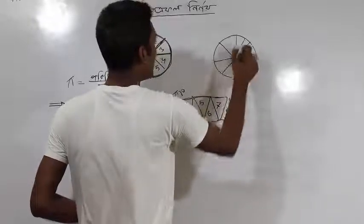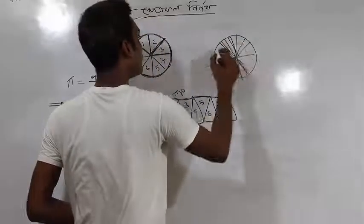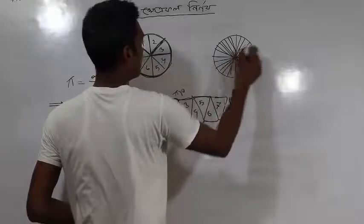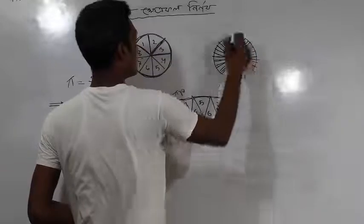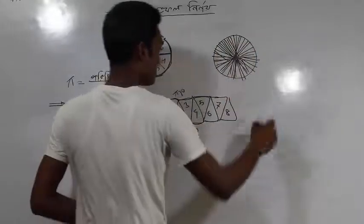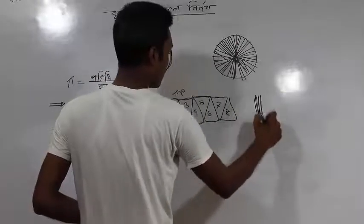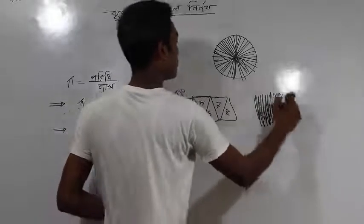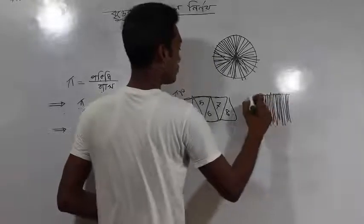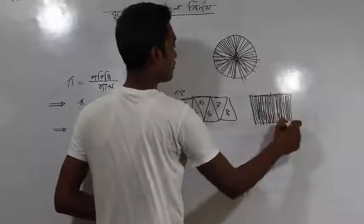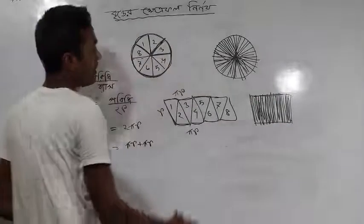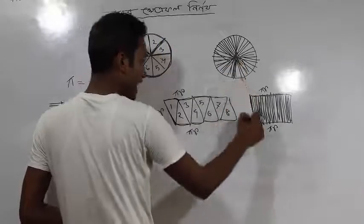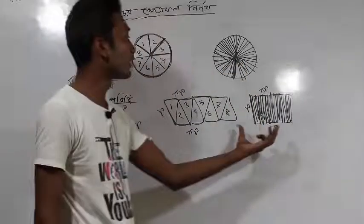Cut it, then cut it. We will get this — we will see what happens, and we will keep this. So this is pi r, and this is the 2nd, so this is the 2nd.